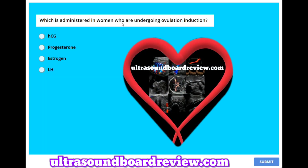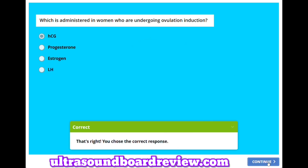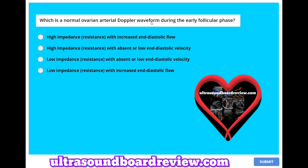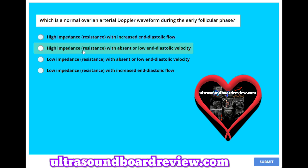Which is administered in women who are undergoing ovulation induction? A. hCG. B. Progesterone. C. Estrogen. Or D. LH. The answer is A, hCG.